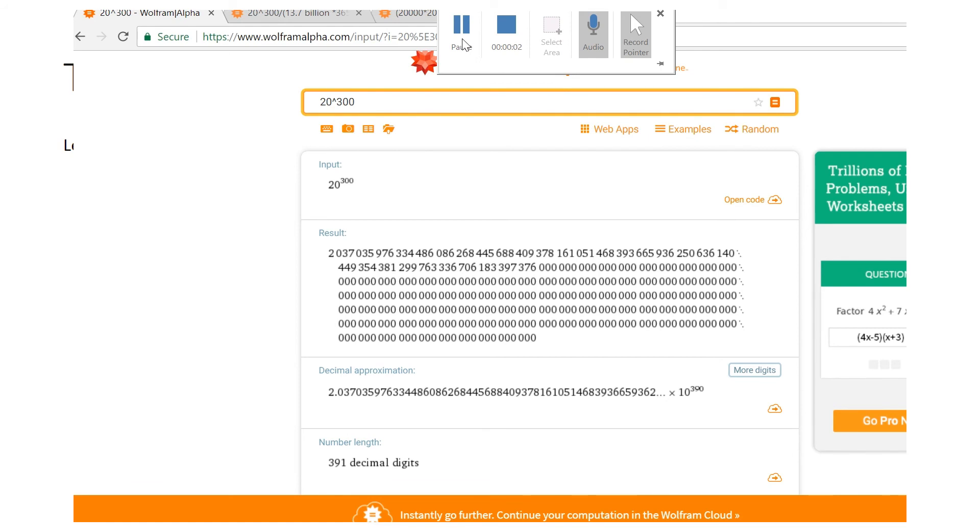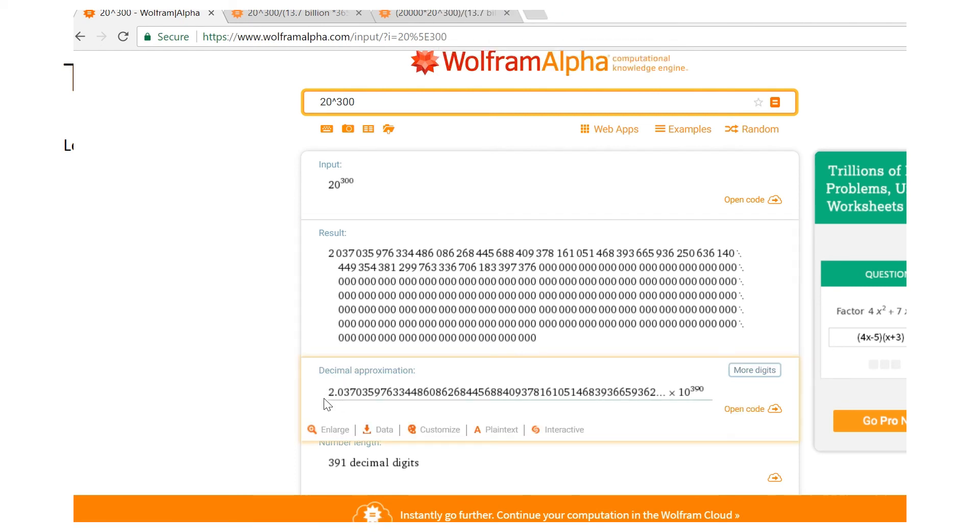Now, let me show you how big it is, the calculation of 20 raised to the 300. This number is huge. 2 times 10 raised to the 390. A huge number. I don't even know how to read this huge number. You can see it.